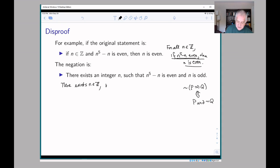So in this particular case, there exists an n in Z such that n to the fifth minus n is even and n is odd.